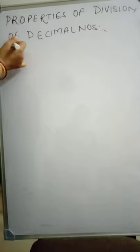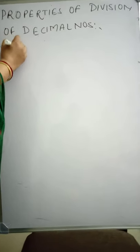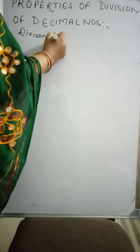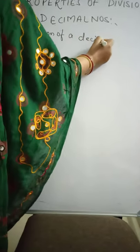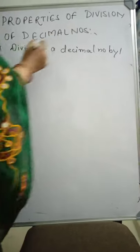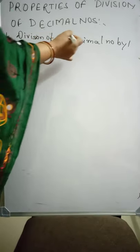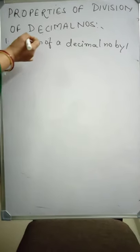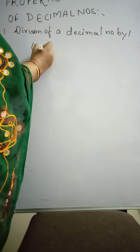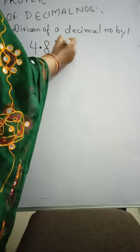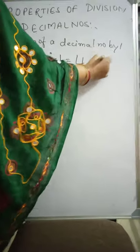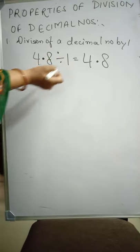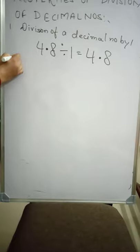First property: Division of a decimal number by 1. Whenever a decimal number is divided by 1, the quotient is the number itself. For example, 4.8 divided by 1 — the quotient is 4.8. So when a decimal number is divided by 1, the quotient is the number itself. This is the first property.